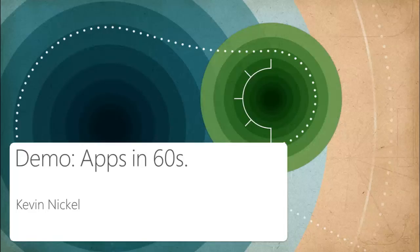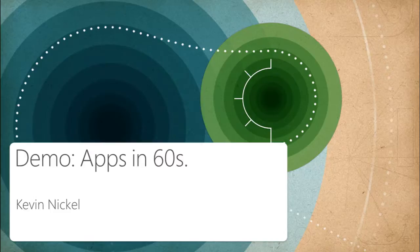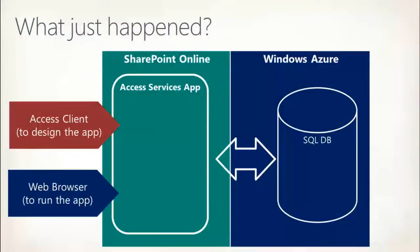Let me quickly rehash what Kevin did. He opened the Access Rich Client and chose to create a new web app. We provisioned a site on SharePoint Online and created a SQL database on Windows Azure. Then Kevin answered the question 'what do you want to track' with 'cars,' and we answered back with a pre-canned schema to build the app. We have about 150 of those schemas already in place on Office.com, and we're adding more every month. This app is hosted on SharePoint Online and backed by SQL databases on Windows Azure.